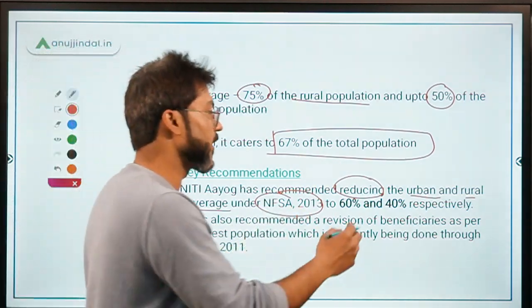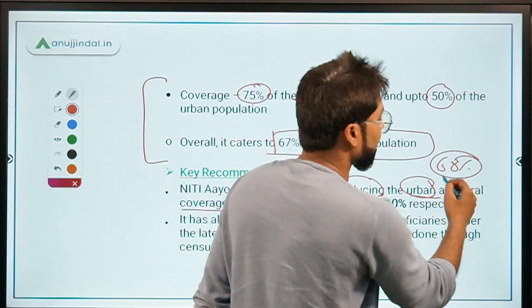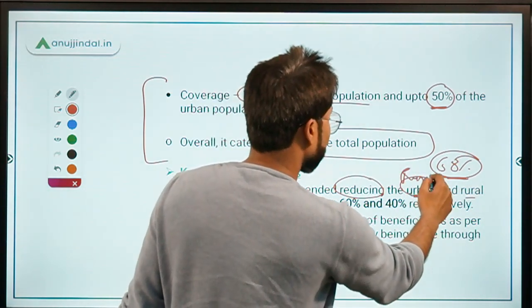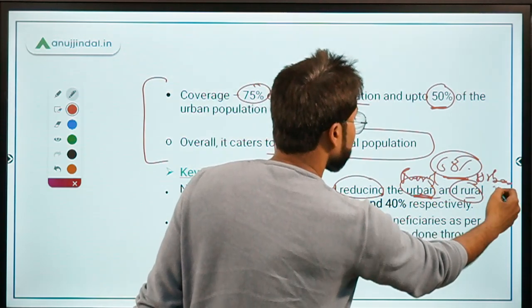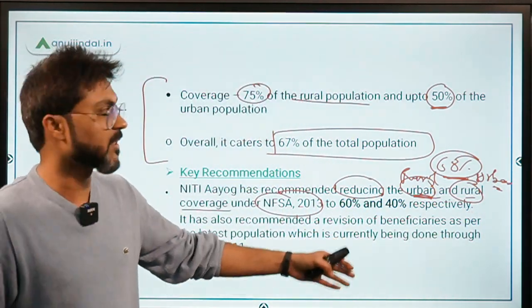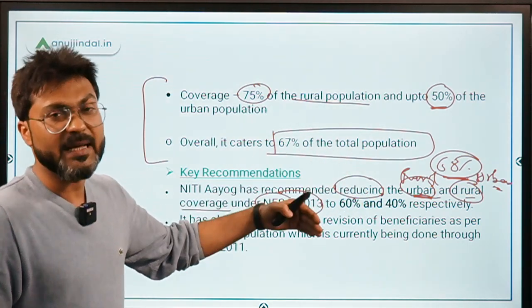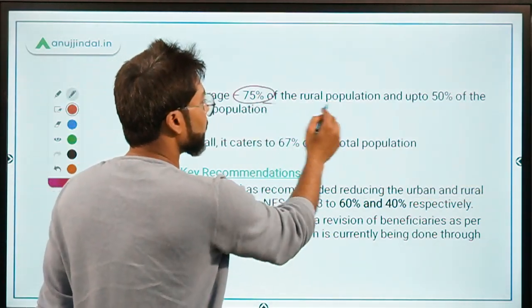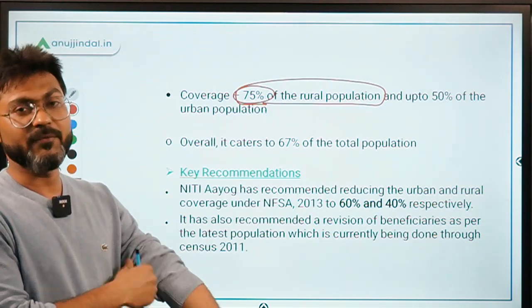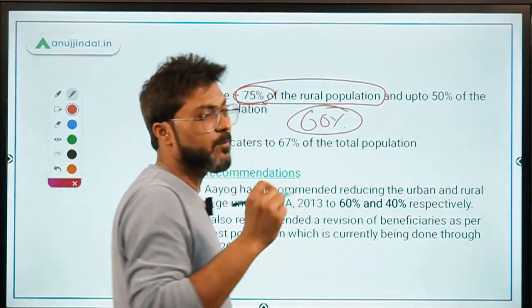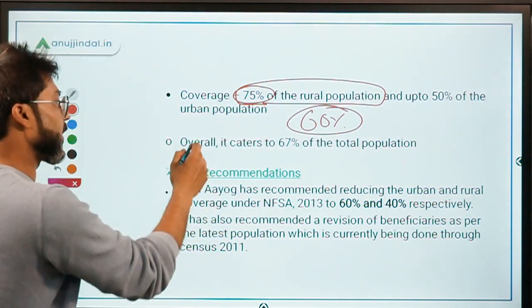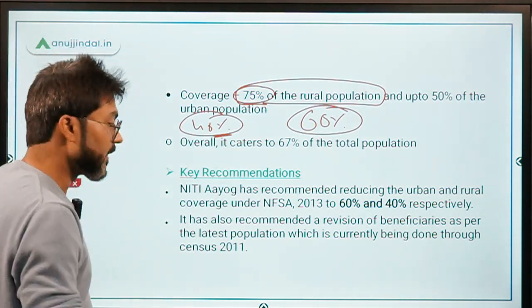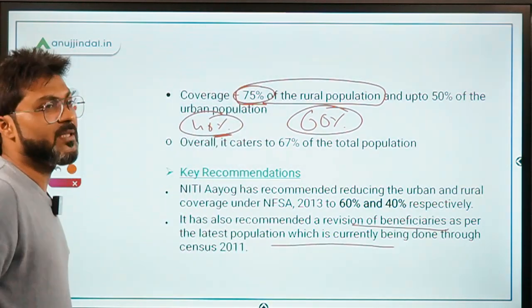To clarify — the urban coverage, which is currently 50%, should be reduced to 40%, and the rural coverage, which is currently 75%, should be reduced to 60%. Don't get confused here. So 75% rural is the current coverage to be reduced to 60%, and 50% urban is the current coverage to be reduced to 40%. NITI Aayog has also recommended a revision of beneficiaries, currently being done under Census 2011.